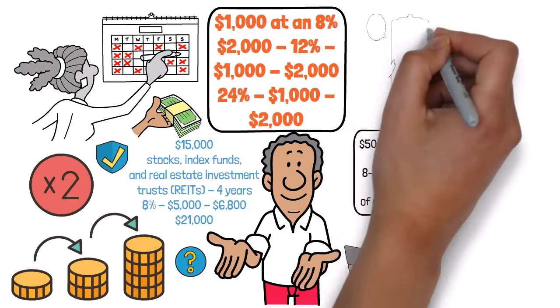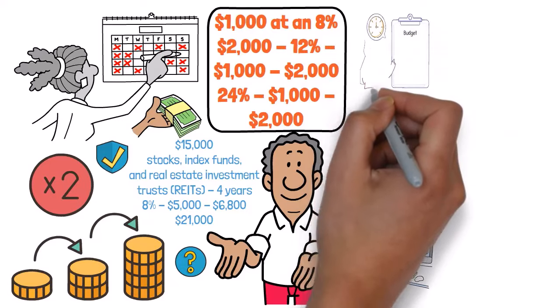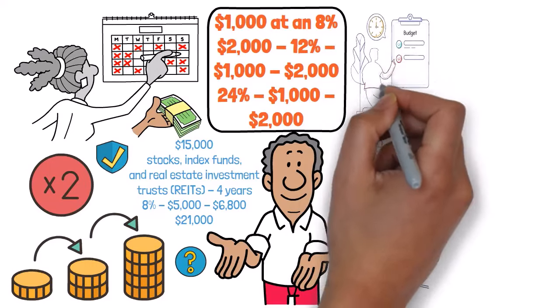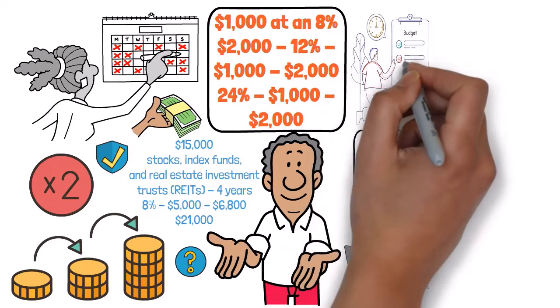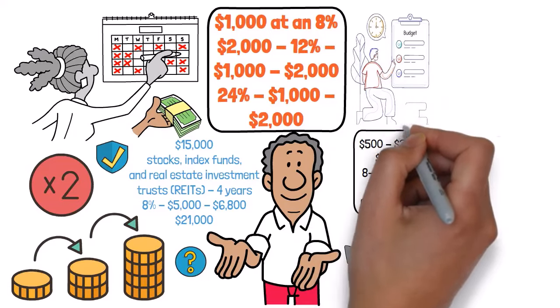Next, establish a budget and stick to it. Consider investing as just another bill you have to pay each month, like rent or groceries. By making it a priority and setting aside a portion of your income for investing, you ensure that you're consistently building wealth over time.